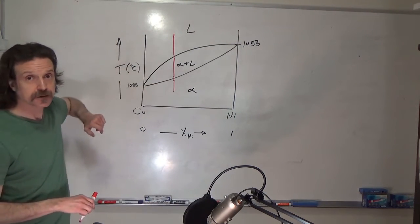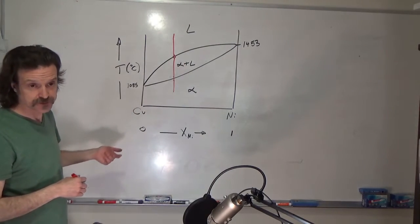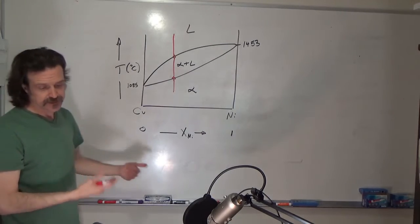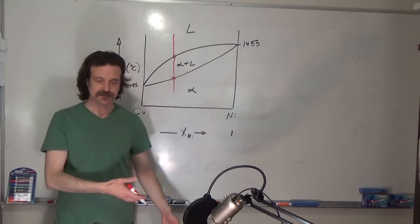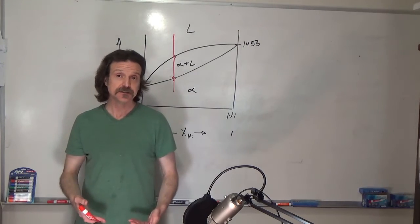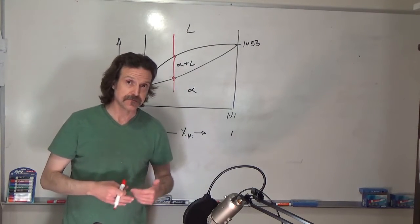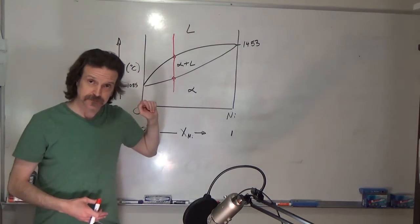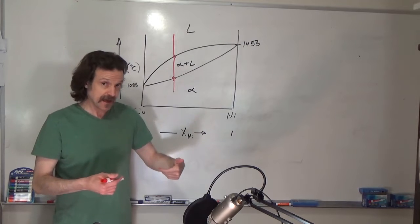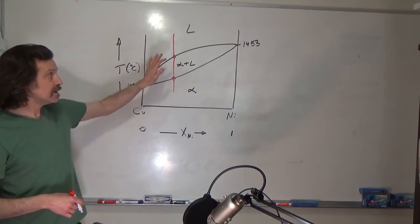We call the point where the first solid forms the liquidus, and the point where the last liquid exists the solidus. In phase diagram work there's lots of jargon, and it's important to know this if you're working in materials science in order to communicate with people. For this class, understand the basic physics and how to read these diagrams — know the language, as it will be on quizzes and exams, but more importantly know what these terms mean.